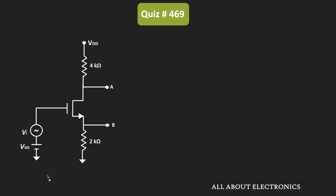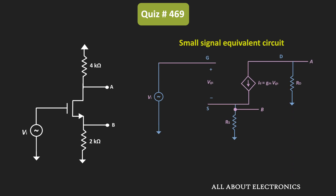As you know, for the small signal analysis all the DC voltage sources in the circuit will act as a short circuit. That means the voltage source Vdd will act as a short circuit, and similarly the voltage source Vgg will also act as a short circuit. Now we need to represent this MOSFET by the small signal model.